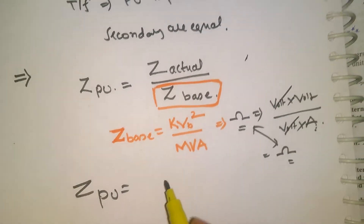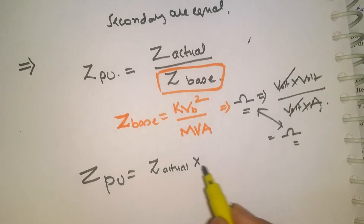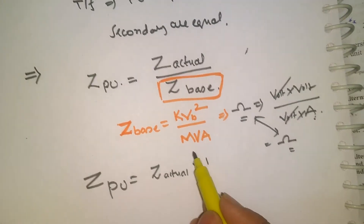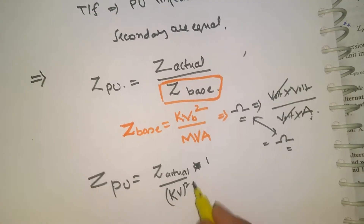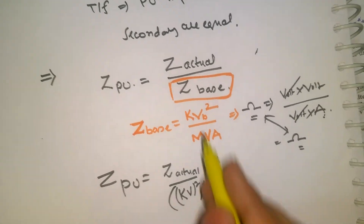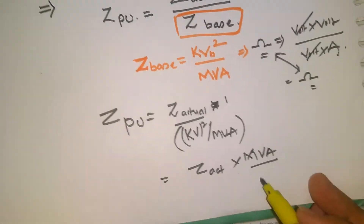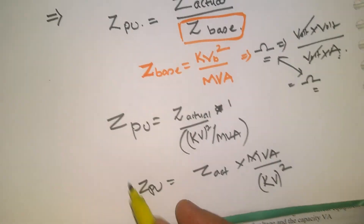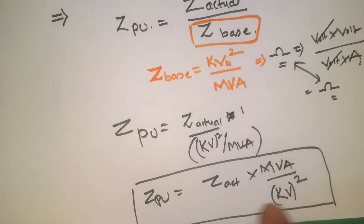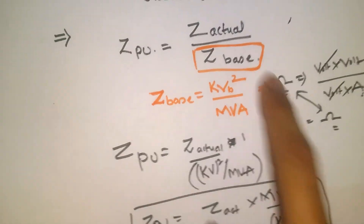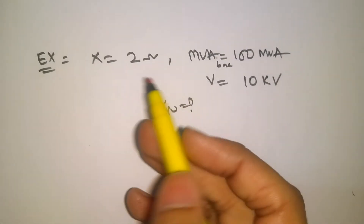The overall formula for Z per unit is Z actual divided by Z base, where Z base equals KV squared divided by MVA. So Z per unit equals Z actual times MVA divided by KV squared. Just make a note: Z per unit equals Z actual divided by Z base, and Z base equals KV squared divided by MVA. Now let's solve one example based on this.